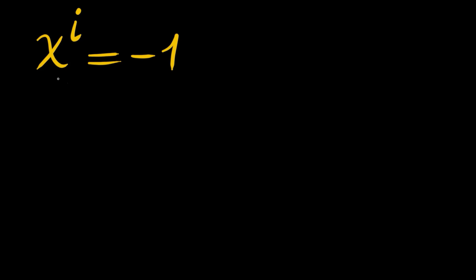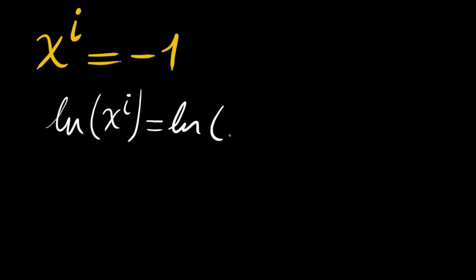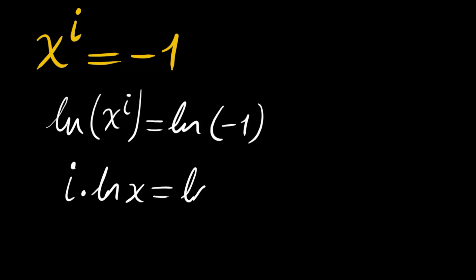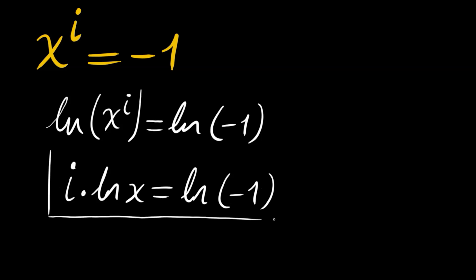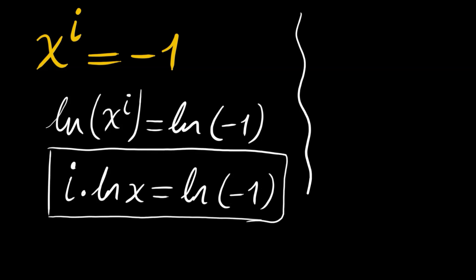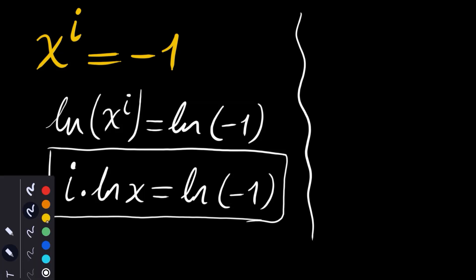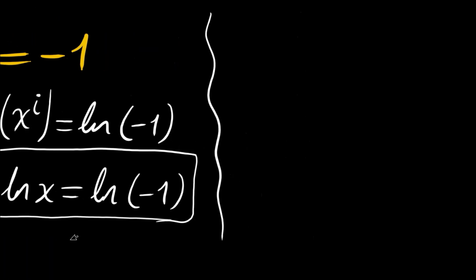We will take the natural log of both sides. So ln of x to the power of i equals ln of negative 1. The left side becomes i times ln x, but the right hand side is something weird — at least for now. Let's find what ln of negative 1 is.